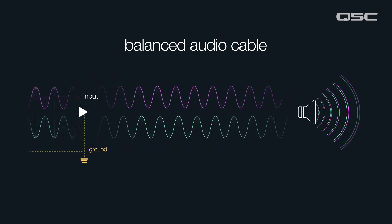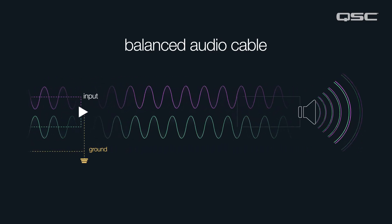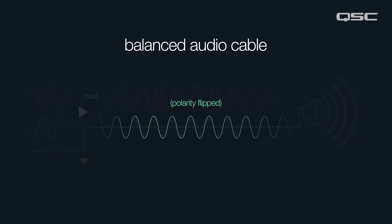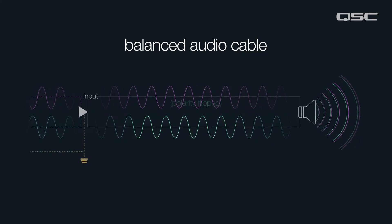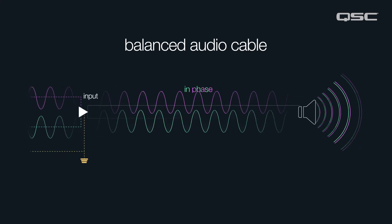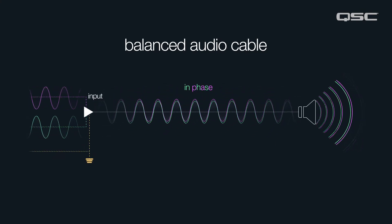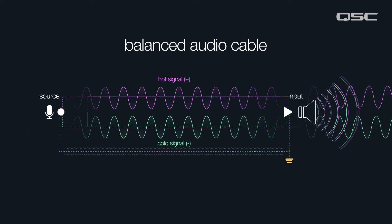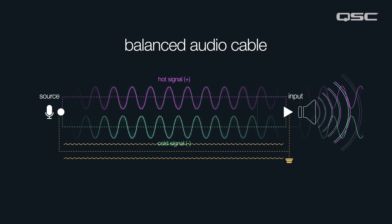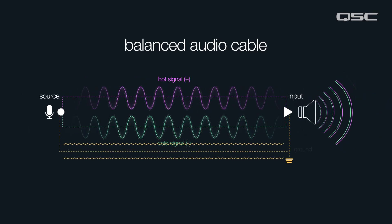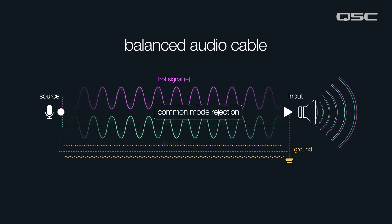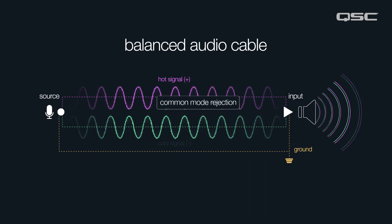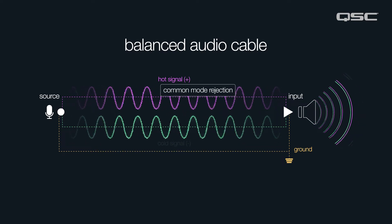Once the two signals reach the end, the negative signal is reversed in polarity and both signals are perfectly in phase. The benefit of this is that any interference that might have been picked up along the way is actually canceled out when that negative signal is flipped. This is called common mode rejection, and it allows balanced cables to be quiet over much longer runs.